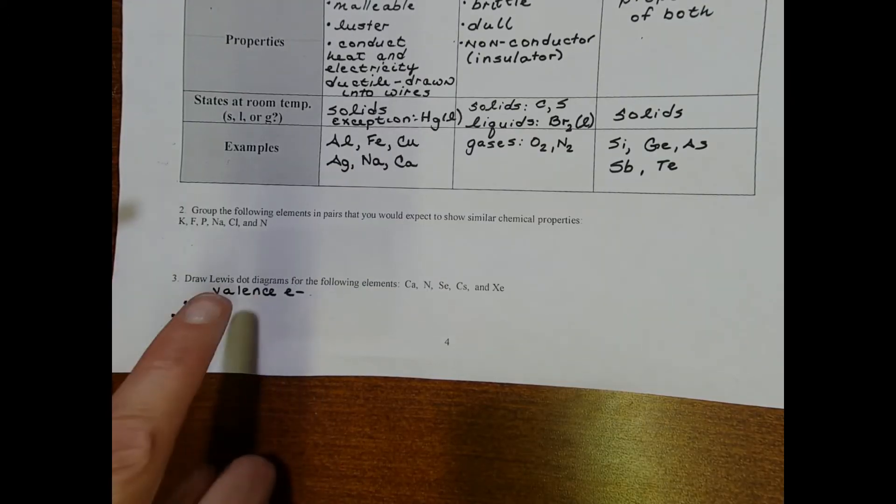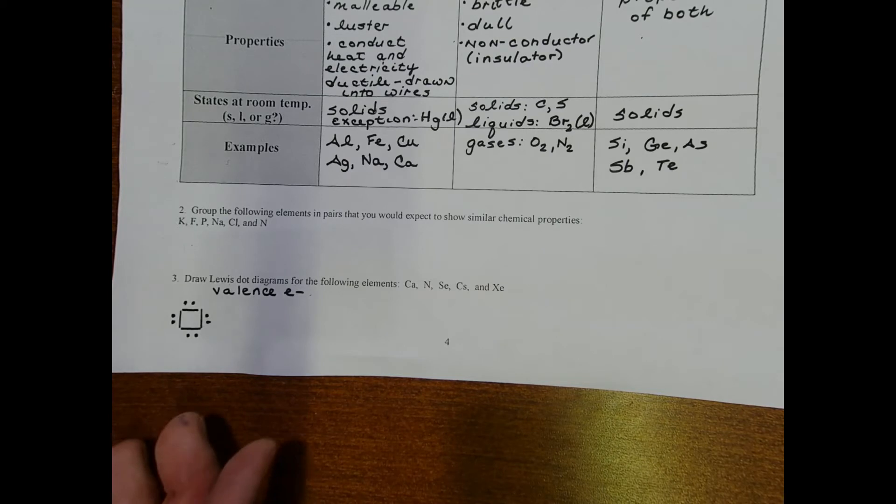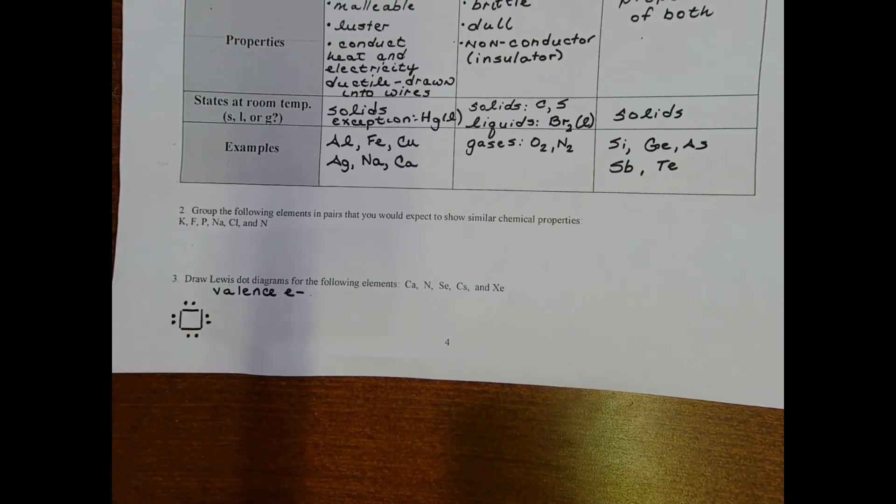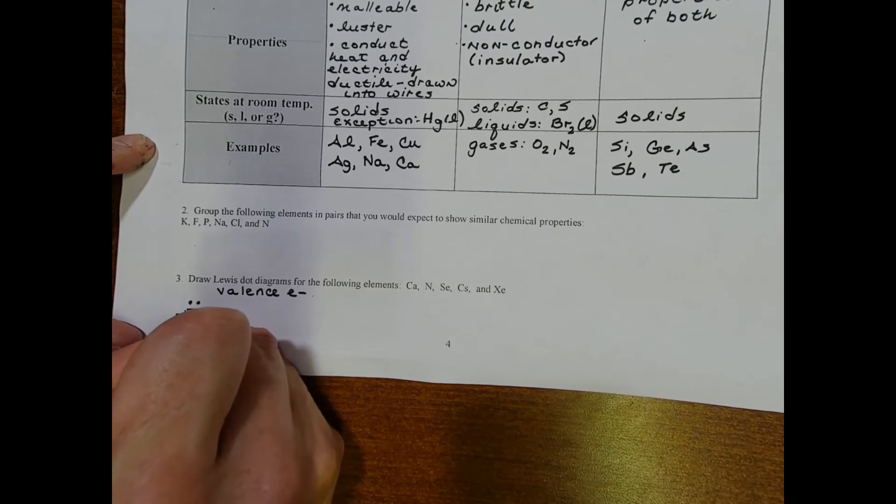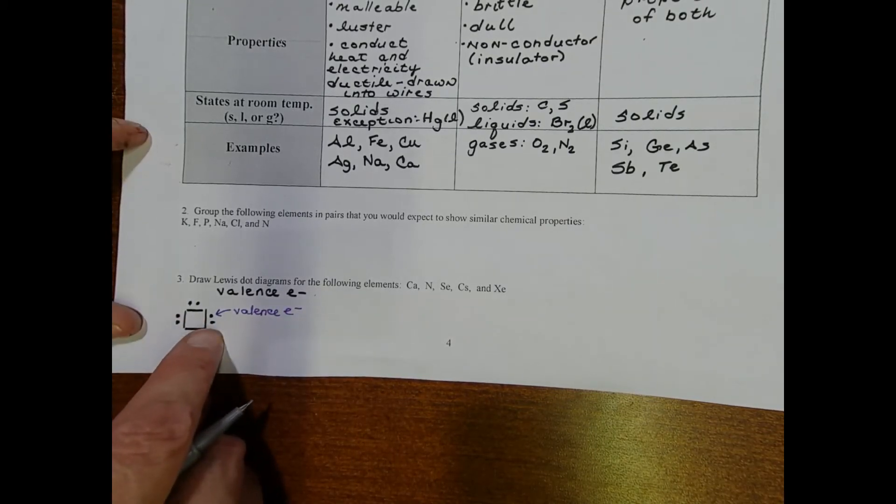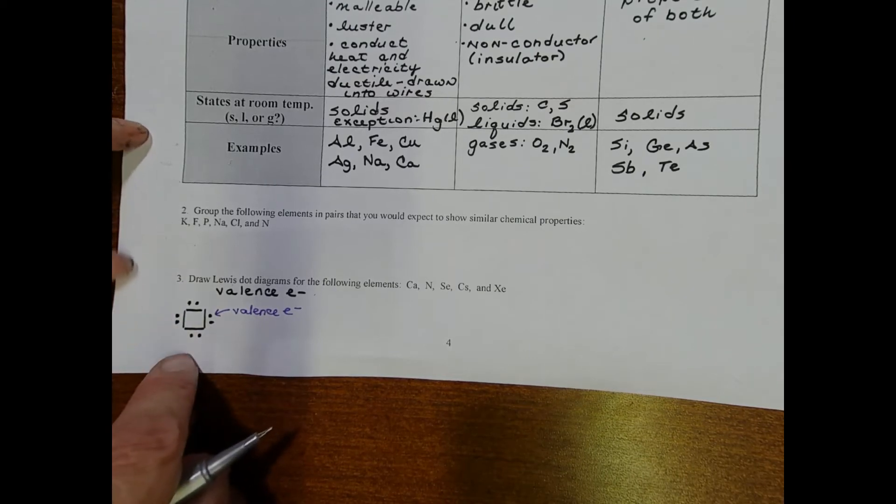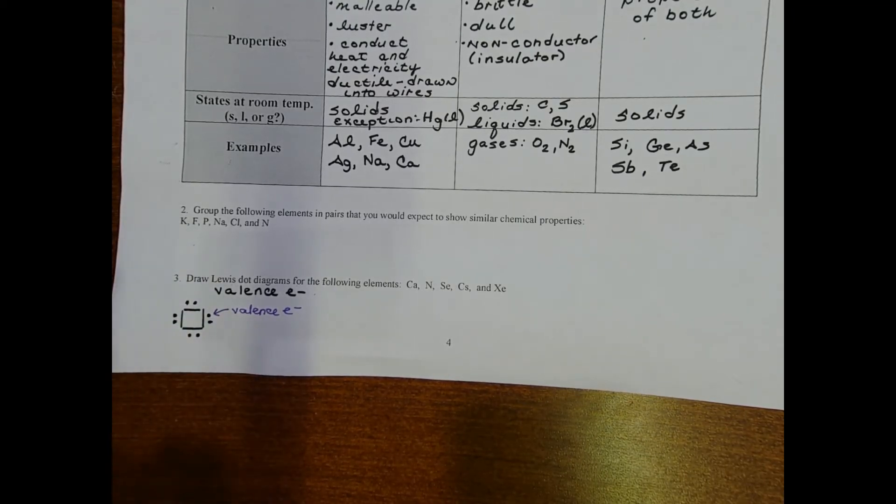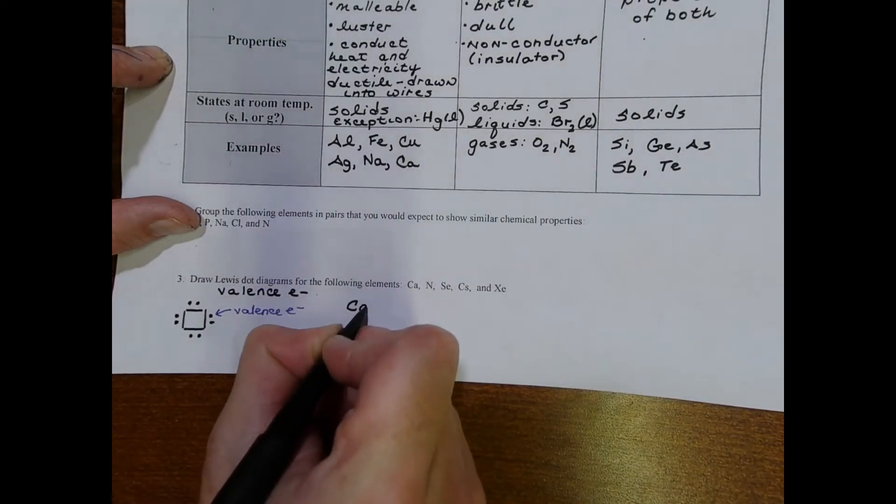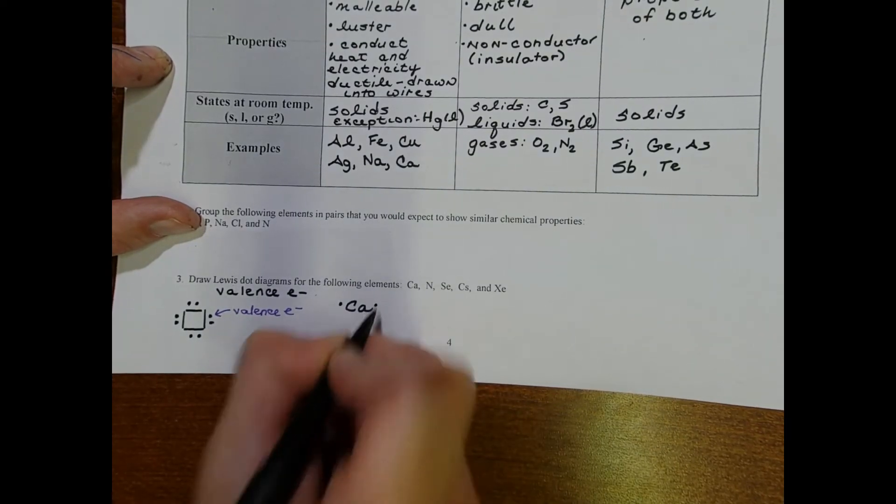In problem three, we're asked to draw Lewis dot diagrams for the listed elements. Lewis dot diagrams show the number of valence electrons associated with a particular element, and this is based off of its group number. If there's an element in the middle, you'll write its elemental symbol, and then we're going to represent the valence electrons by little dots. The dots, if you had to use all eight electrons like if you had a group 8A, you'd arrange the dots like this. The first example is calcium. Calcium is in group two, so we know it has two electrons, so maybe something like that. We have nitrogen—nitrogen is in group five, so I need to put five dots around nitrogen.